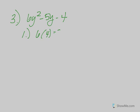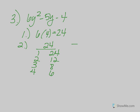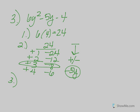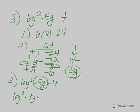Step one: multiply 6 times 4, which gives 24 — don't worry about the sign yet. Step two: list the factors of 24 — 1 and 24, 2 and 12, 3 and 8, 4 and 6. Here the product is negative, so one factor must be positive and one negative. The middle term is negative 5y, so the larger factors are negative and the smaller ones positive. The pair giving negative 5 is positive 3 and negative 8. Step three: rewrite the trinomial, replacing negative 5y with the two new factors: 6y² + 3y - 8y - 4.